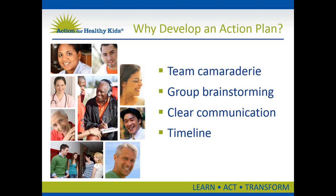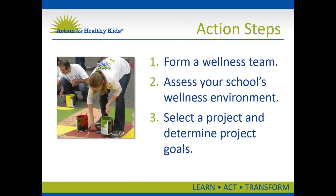What are the steps in the action planning and implementation process? By this point, you've already completed the first two steps: forming a wellness committee and assessing your school environment. All the steps we're going to discuss are on our action planning template, which you'll find on the parent toolkit page at Action for Healthy Kids. Once you've formed your team and completed your assessment, it's time to select a project. Use the assessment results and the passions of the people on your team as a guide. Make sure you obtain project approval from your school administrator before proceeding.